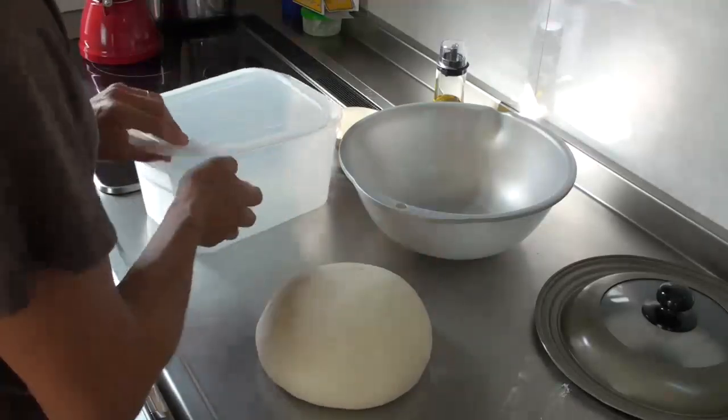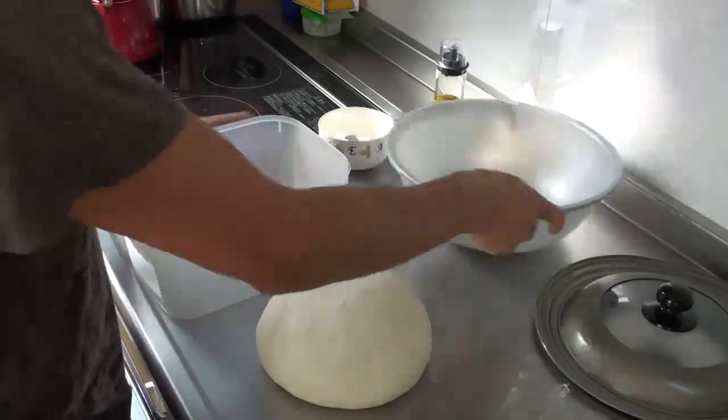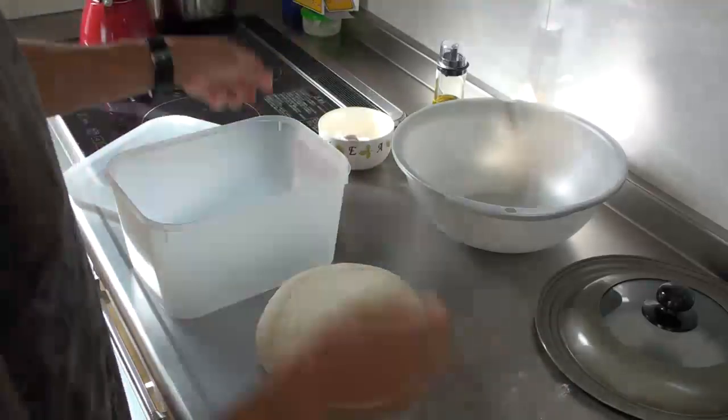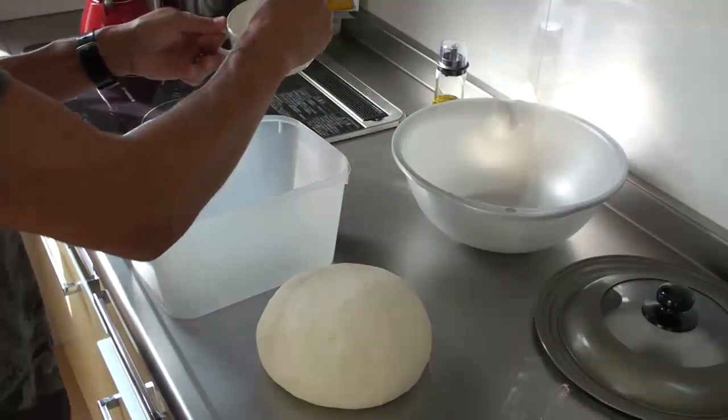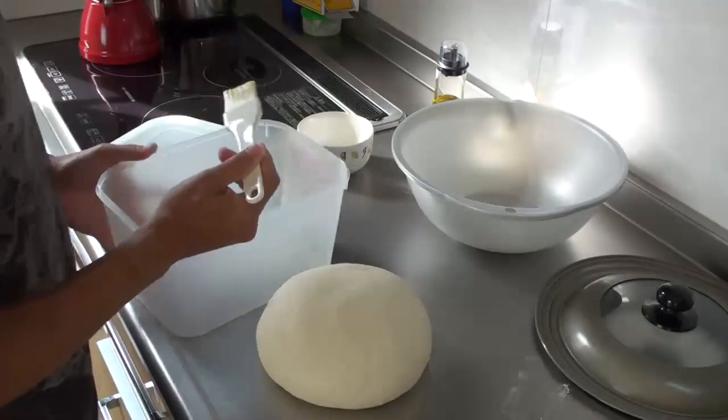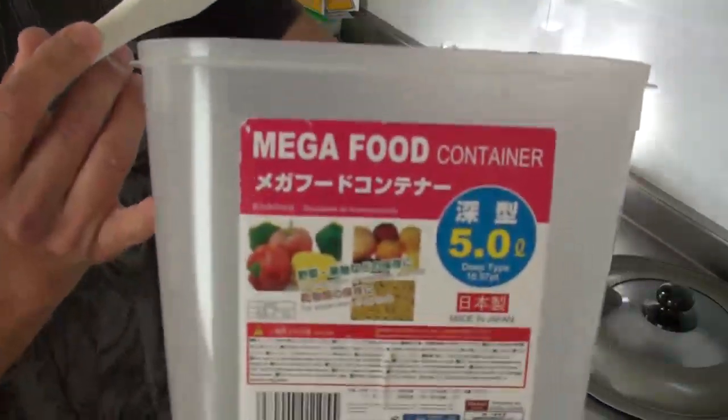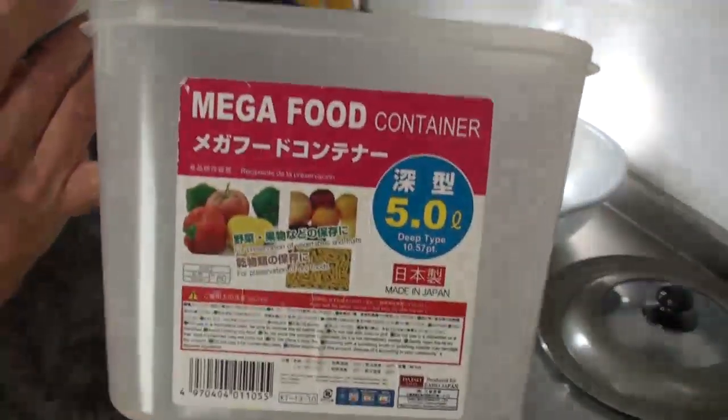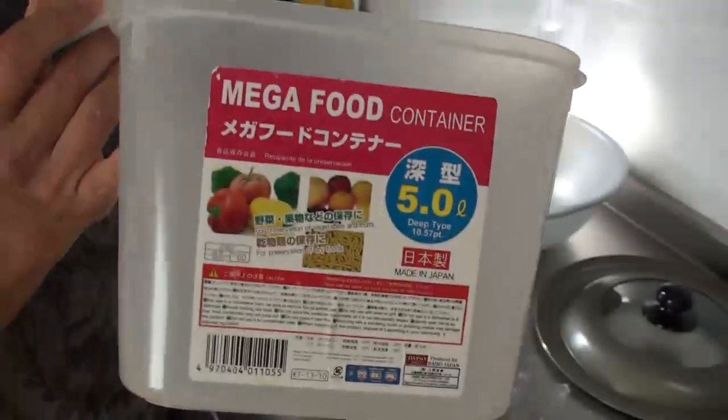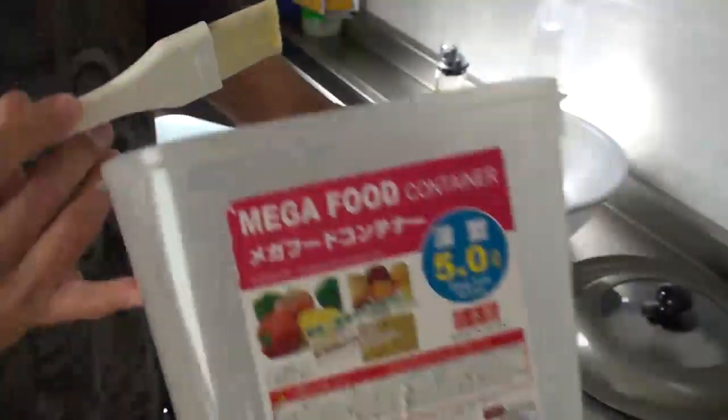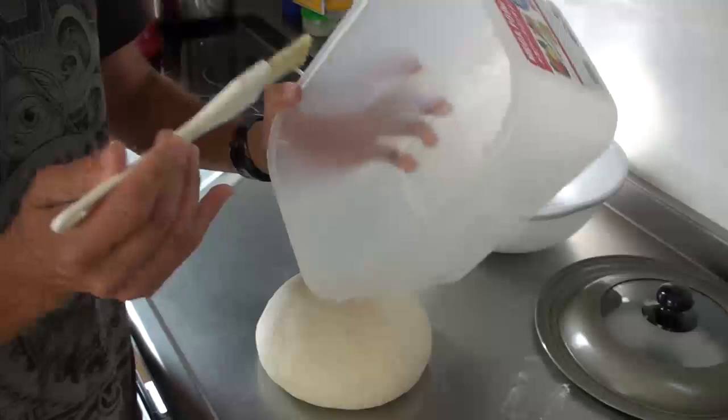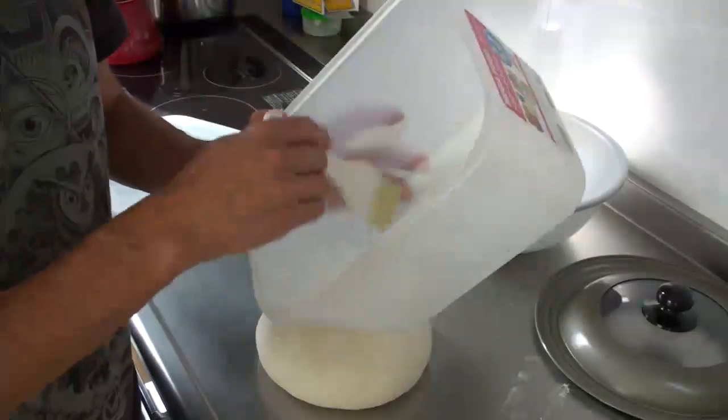Next it's going to spend three days, a full 72 hours in the refrigerator. So what I get right here is a five liter container. I got this at a Japanese dollar store. Well, it's a hundred yen store. So five liter container and I lightly, very, very extremely lightly brush the corners, the edge, and the bottom with a very little, tiny, tiny amount of olive oil.